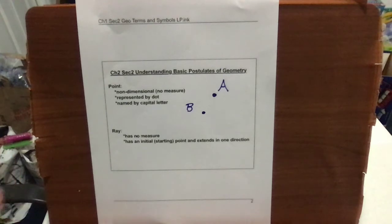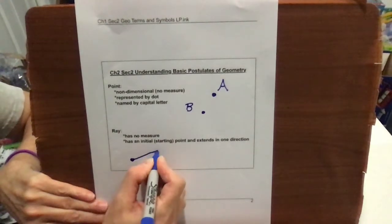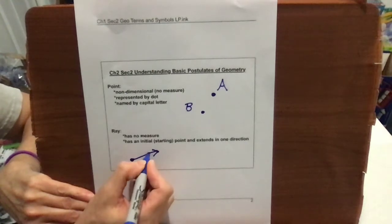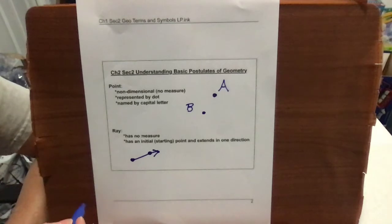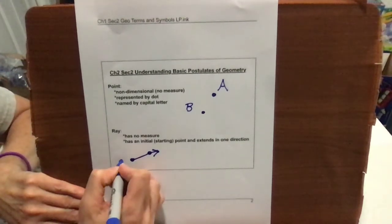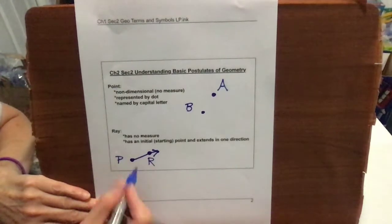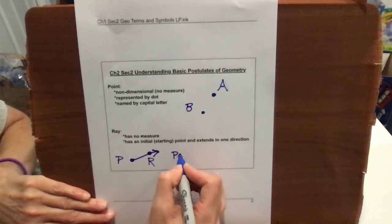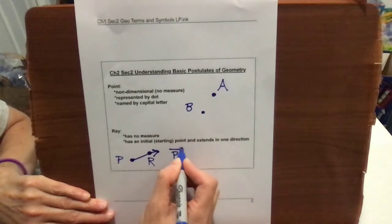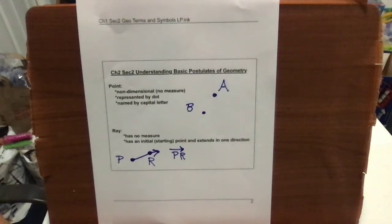A ray has no measure. It has a start point, or what we call an initial point, and then it will go in a direction. There's another point somewhere on the line — there are infinitely many points on this ray, but we only need two identified. I'm going to call this P and R. This ray starts at P because that's its initial point, and R is the direction in which the ray is traveling. We put a ray symbol over the PR.